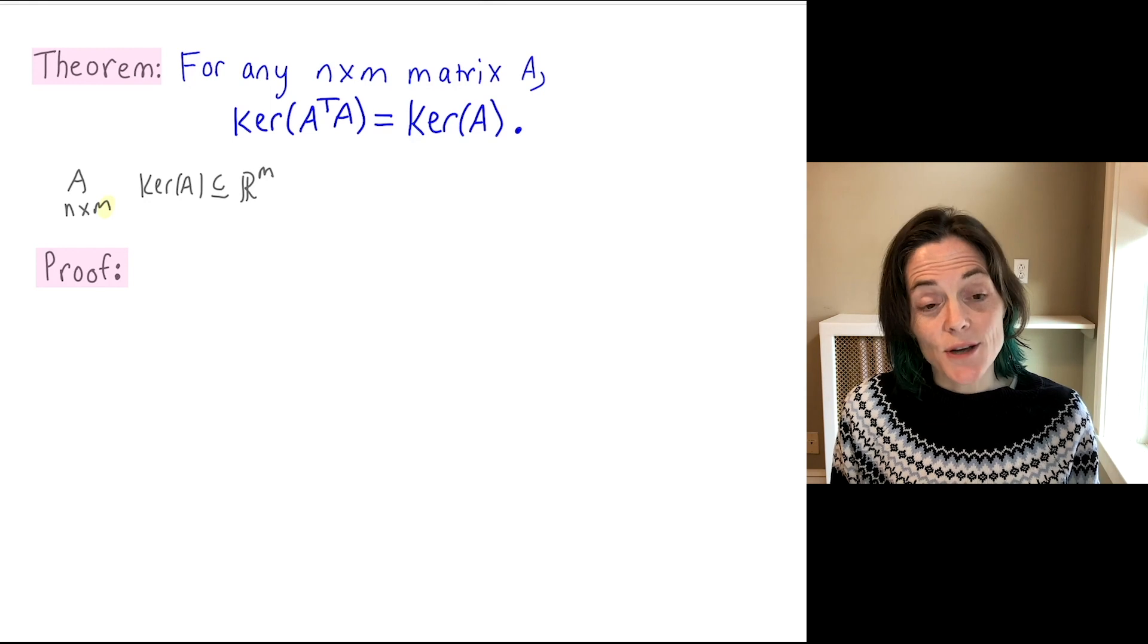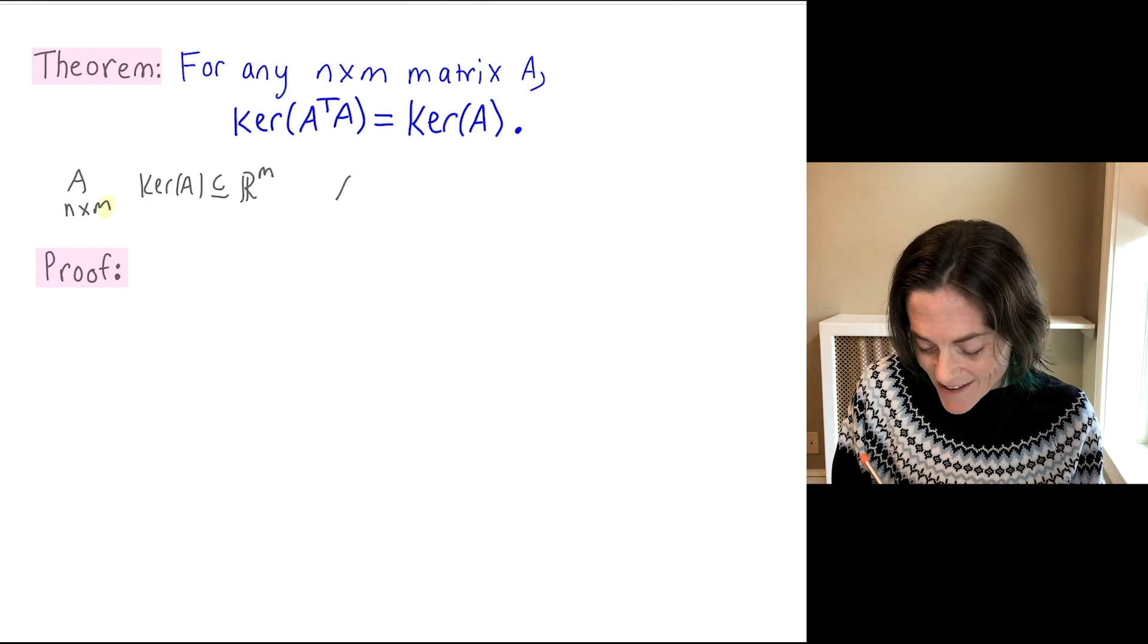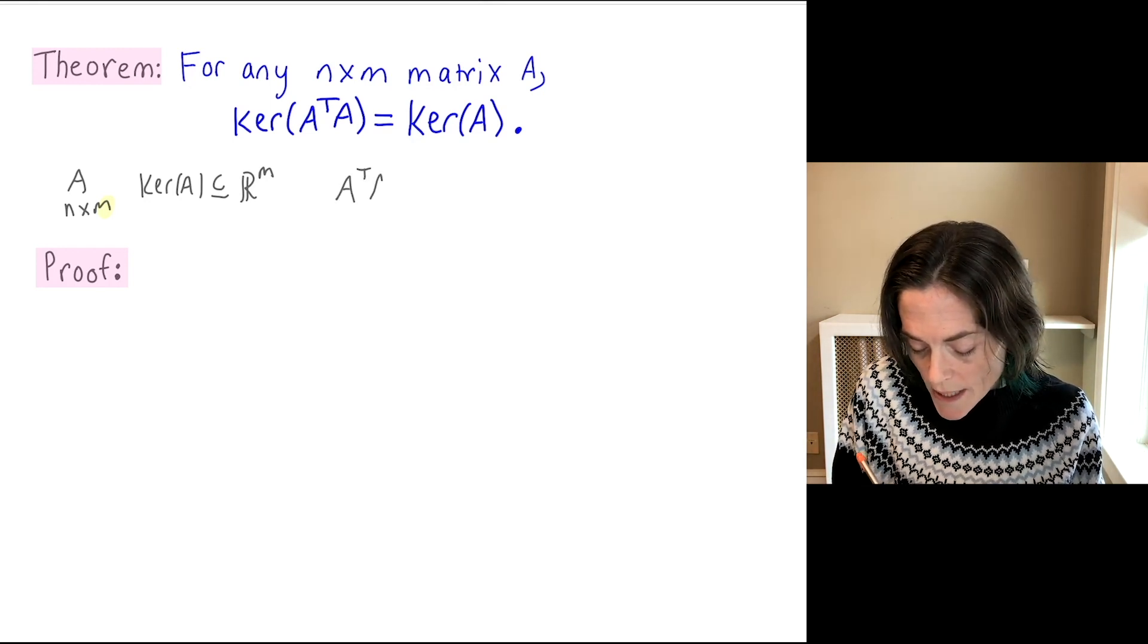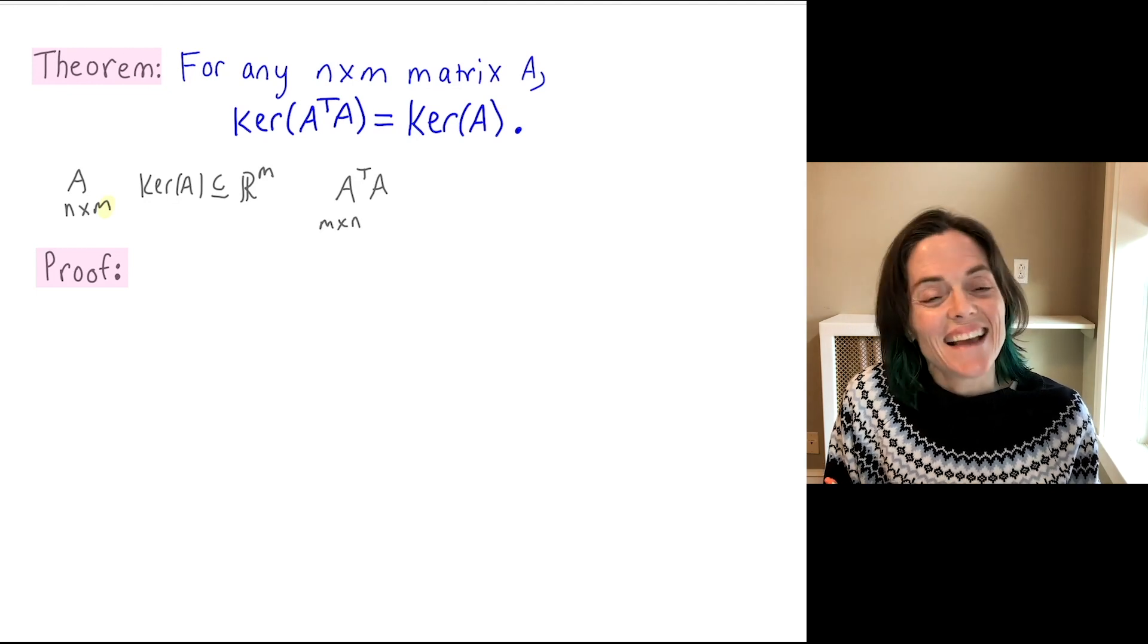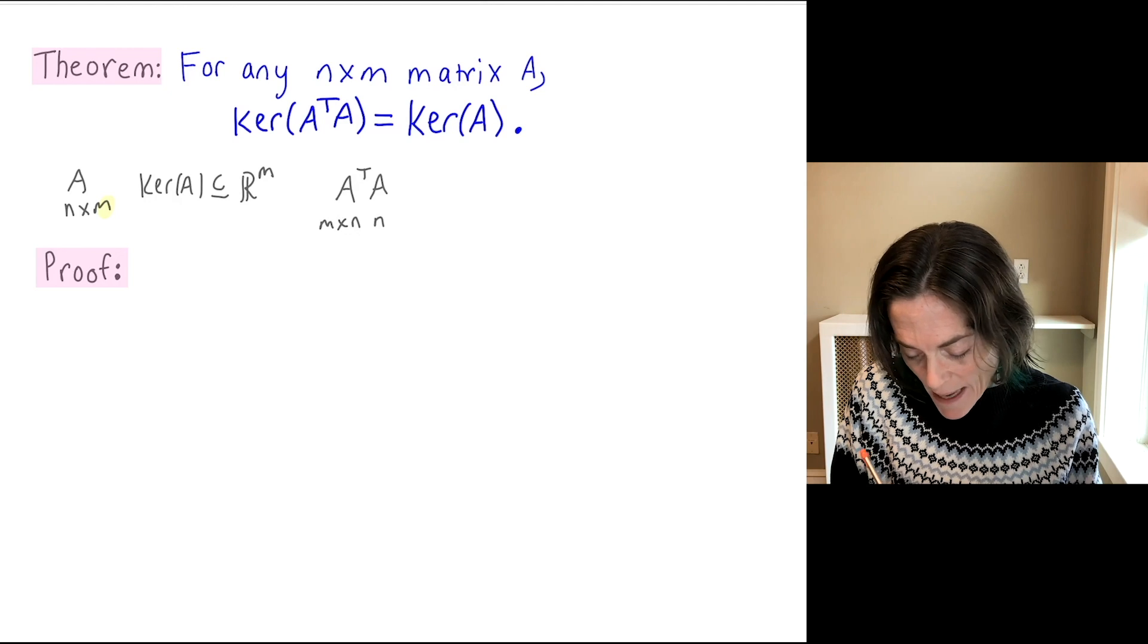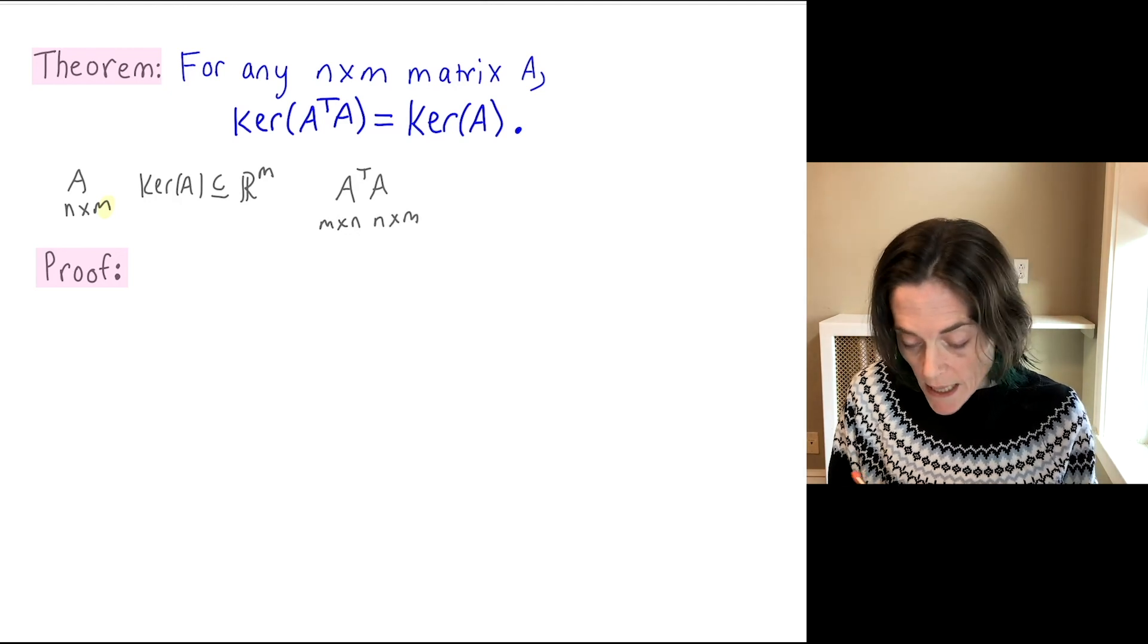Now, what about A transpose A? Well, A transpose, the size is m by n, and then A is n by m. And so A transpose A is a square matrix of size m by m.